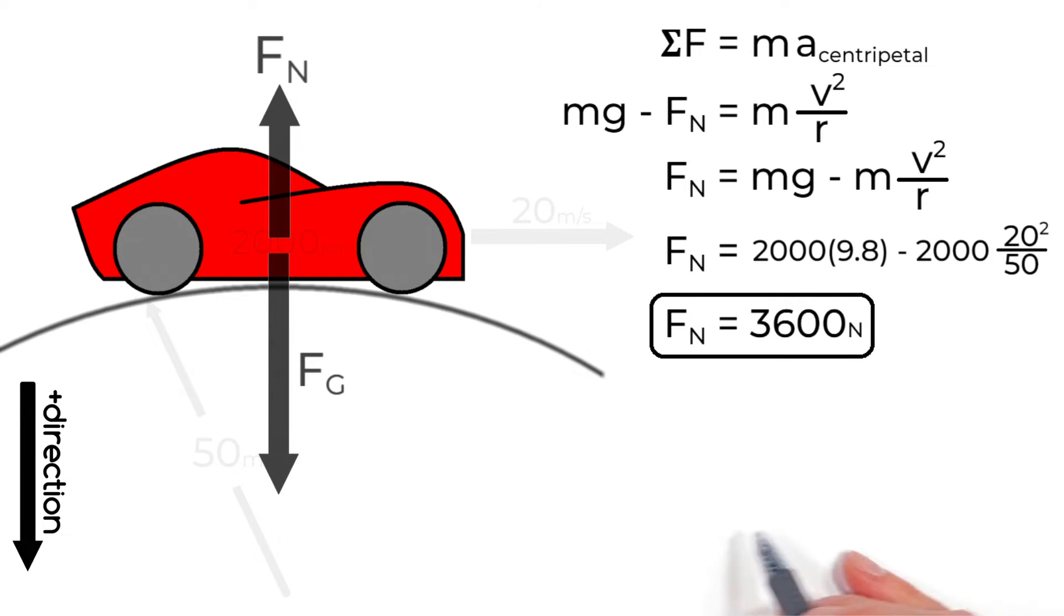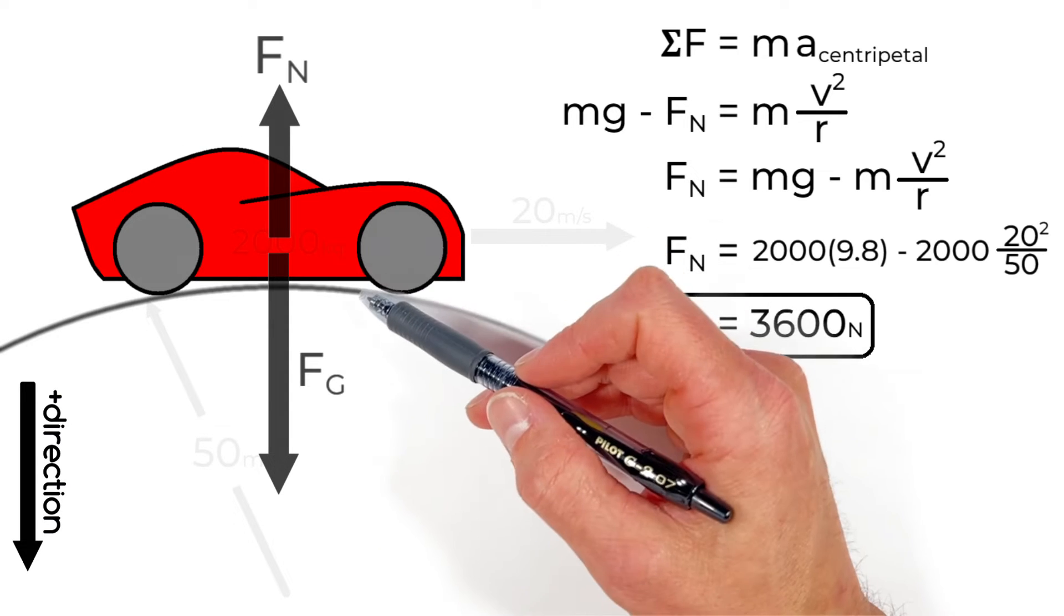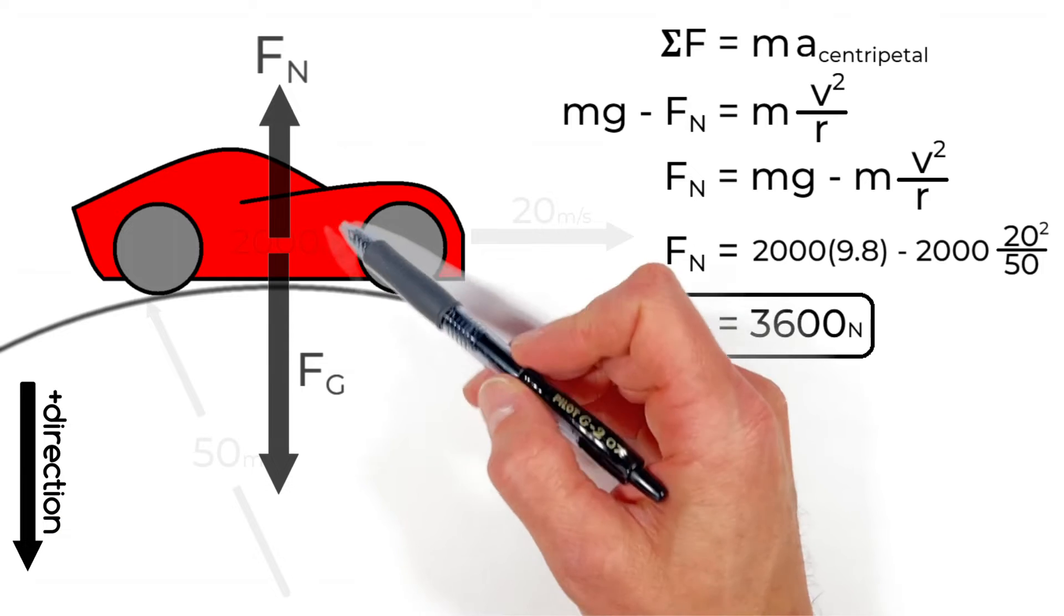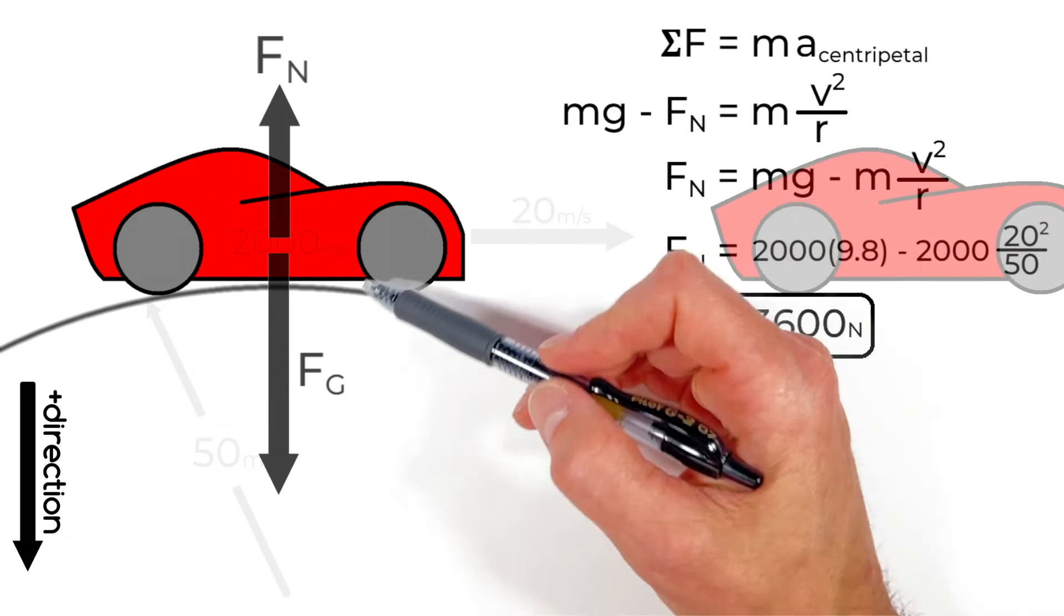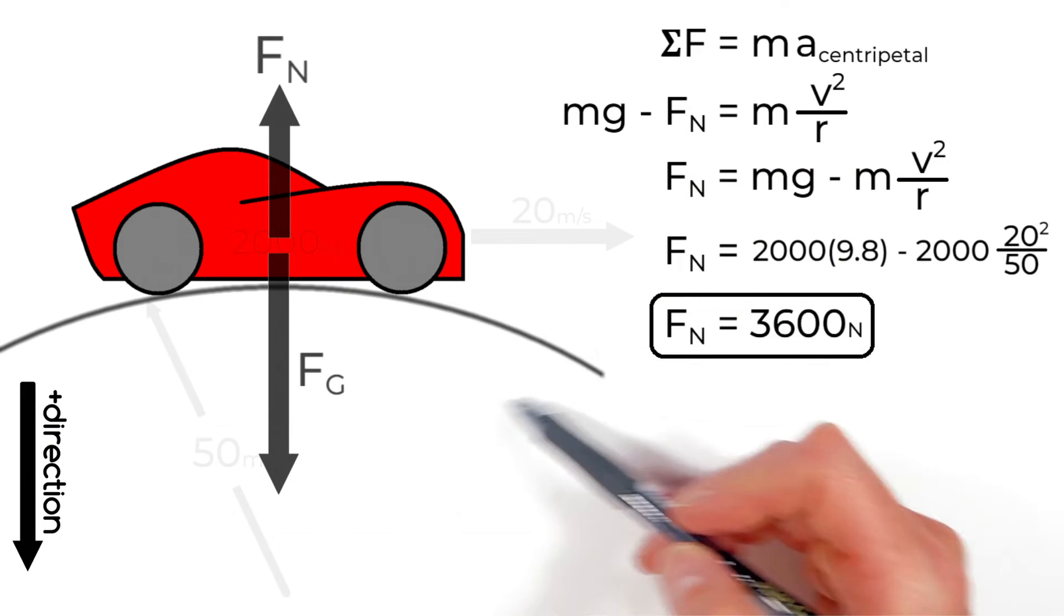And there's an important point here. These 3600 newtons has to be less than the weight of the car. So if the normal force was equal to the weight of the car the forces on the car would be balanced and the car would just cruise along in a nice straight line. But they're not. The car is in fact accelerating downward.